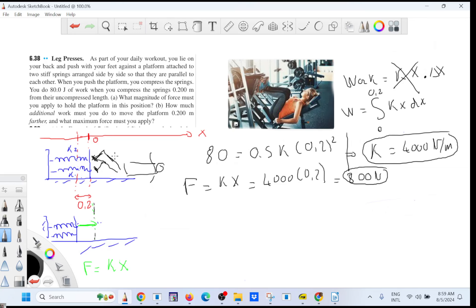Okay, now, so from here, you're going to compress even more. So you go from 0.2 to another 0.2. So all together, it's going to be 0.4. So you go from that position here, you compress, compress, and now it's going to be 0.4.